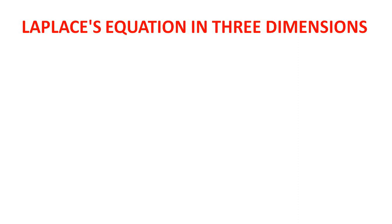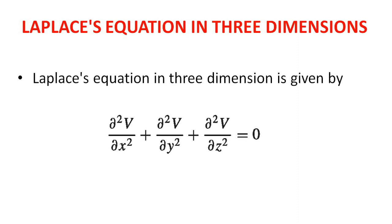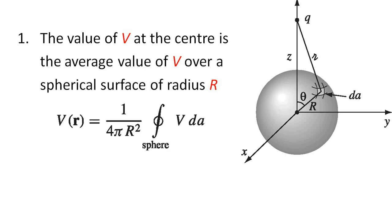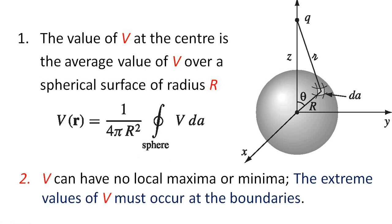Laplace equation in three dimensions: ∂²V/∂x² + ∂²V/∂y² + ∂²V/∂z² = 0. The value of V at the center of a sphere of radius R equals the average value of V over the spherical surface: V = (1/4πR²) ∮ V dA. There are no local maxima or minima; extreme values must occur at the boundaries.